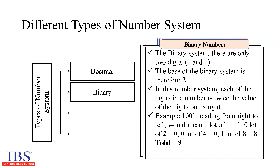The binary system, as the name suggests, has only two digits: 0 and 1. The base of the system is therefore 2. In this number system, each digit in a number is twice the value of the digit on its right. For example, 1001 in the binary system, reading from right to left, means 1 lot of 1 equal to 1, 0 lots of 2 equal to 0, 0 lots of 4 equal to 0, and 1 lot of 8 equal to 8, totaling to 9 in the decimal system.